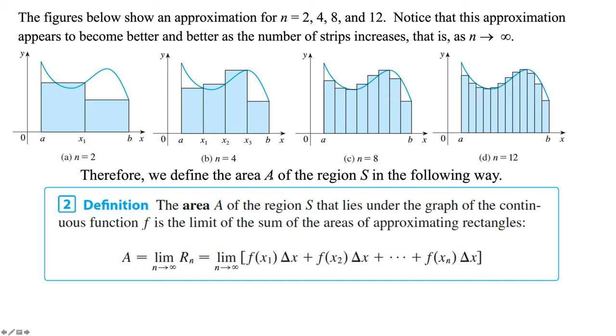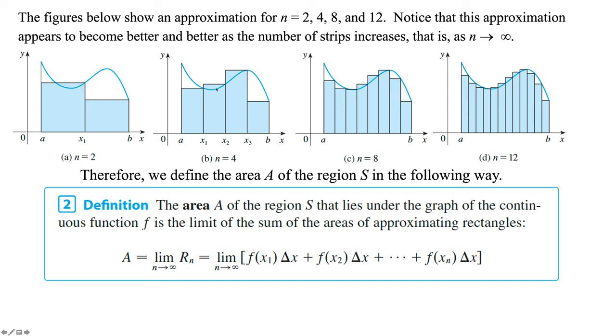So therefore, we're going to define the area of the region S in the following way. The area A of the region S that lies under the graph of the continuous function F. That's important. You can't all of a sudden say, oh, look, come on, mouse. We can't have all of a sudden a vertical asymptote show up. Then how do we touch the curve? Okay, we can't have an open circle somewhere. It has to be continuous. So a continuous function F is the limit of the sum of the areas of approximating rectangles as they go to infinity.